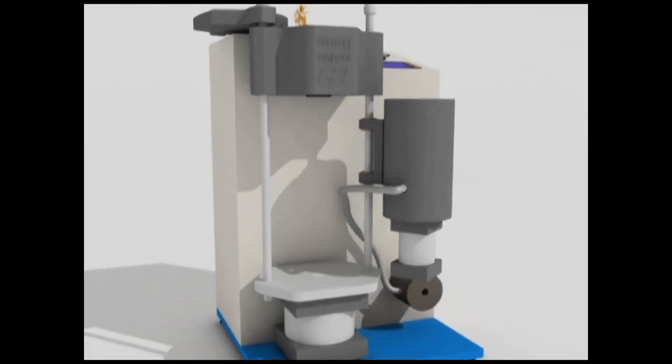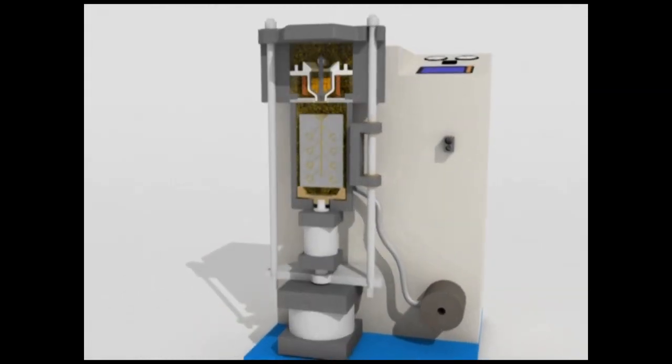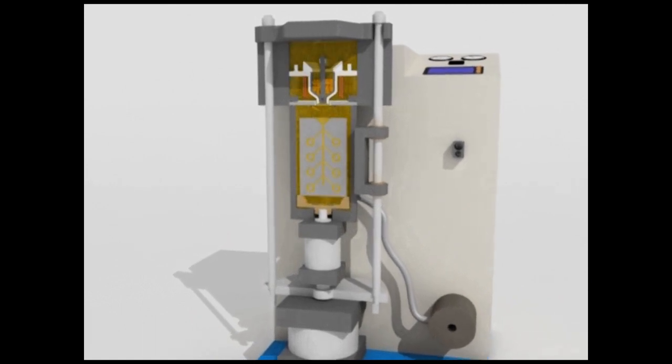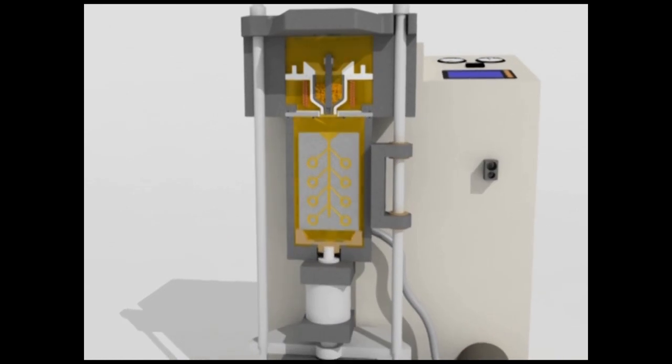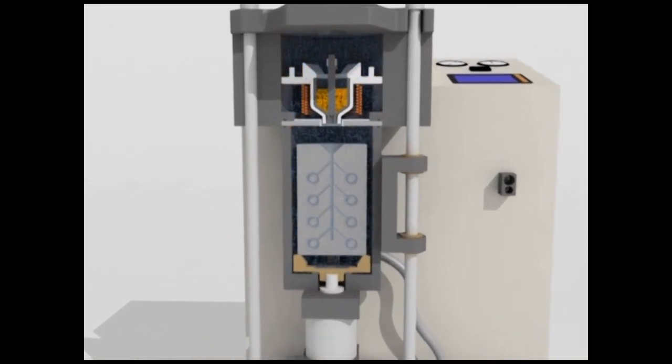In our system, both the flask and crucible are located in a common chamber which is first fully evacuated by vacuum before melting, followed by helium gas supplied to create an inert atmosphere.